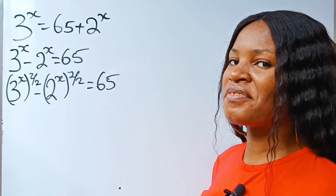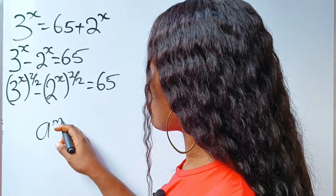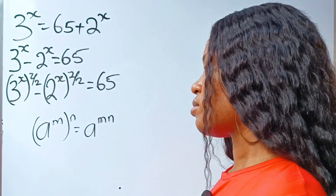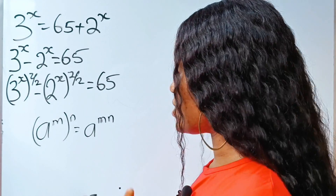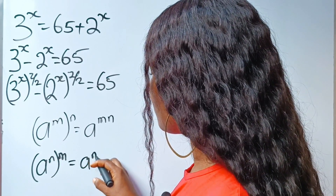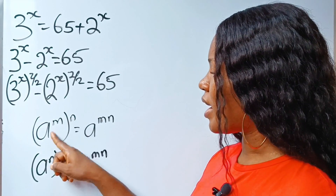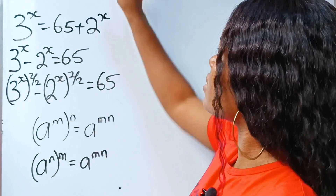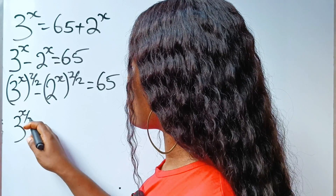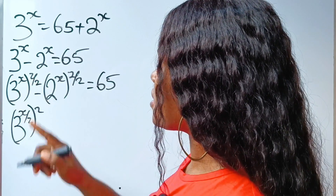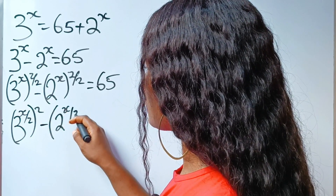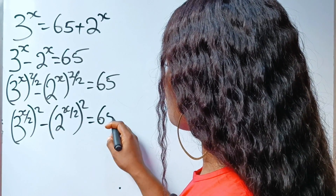Now, I want us to recall this law of exponents or indices that states that a to the power of m raised to the power of n is equal to a to the power of m times n. That means we can interchange the position of these two powers. So we are going to have 3 to the power of x over 2 squared, minus 2 to the power of x over 2 squared, is equal to 65.